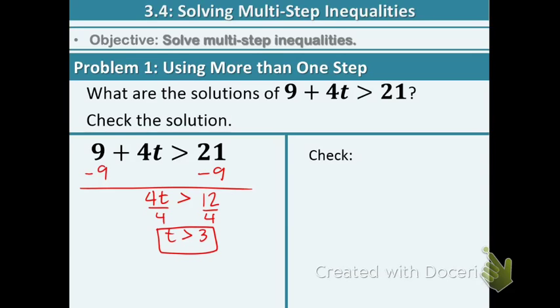Now we need to check. We're using the same checking process as in the other inequality problems we were doing in the last two sections. So we want to check the endpoint first.